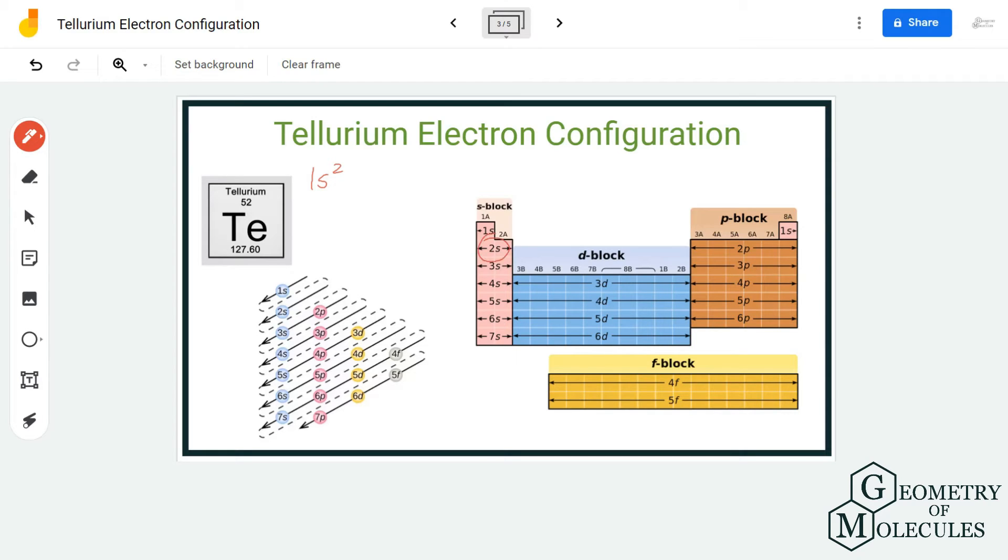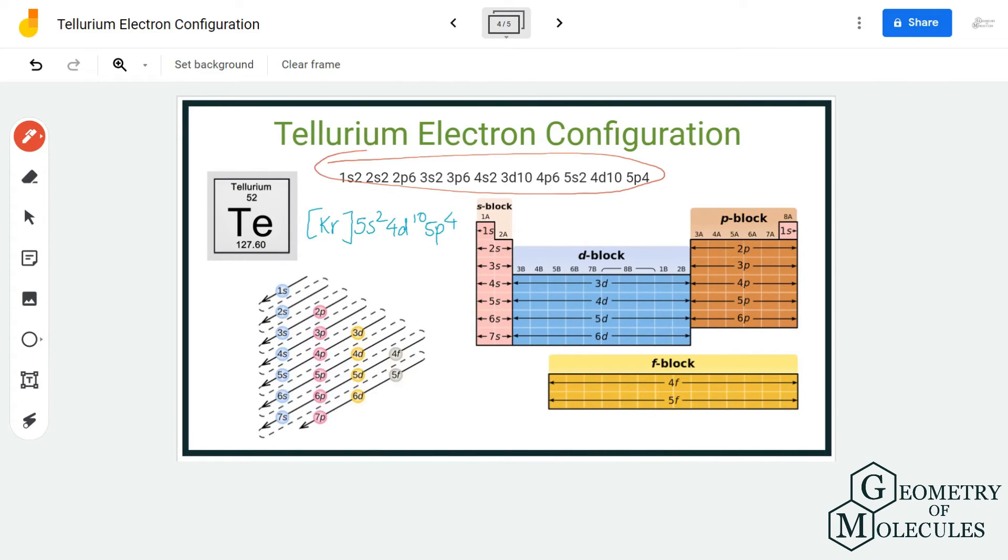The electron configuration of tellurium is 1s2 2s2 2p6 3s2 3p6 4s2 3d10 4p6 5s2 4d10 5p4. If you calculate the number of electrons, the total will be 52, and that is what we do. Once we know the number of electrons, we start arranging electrons in the orbitals.